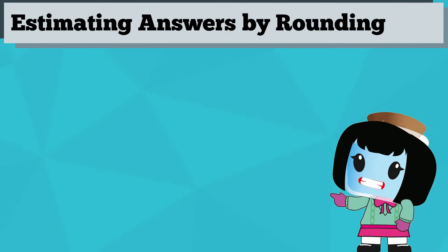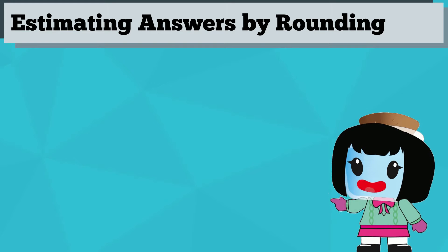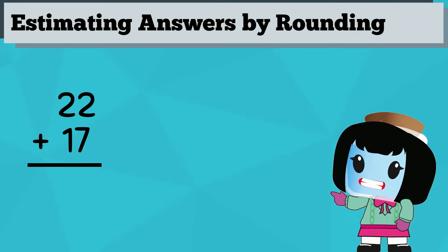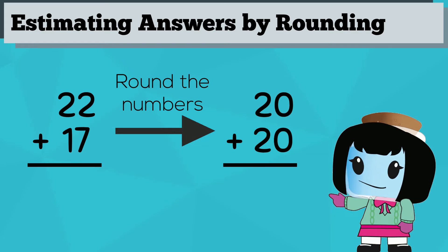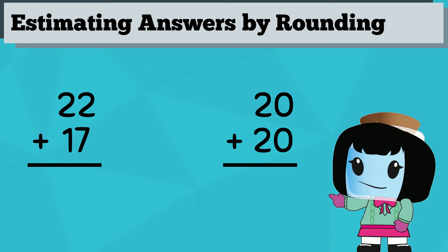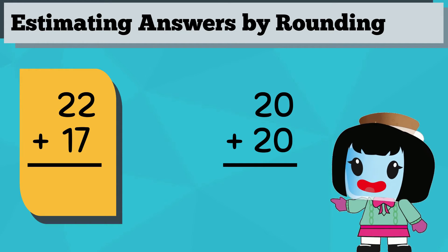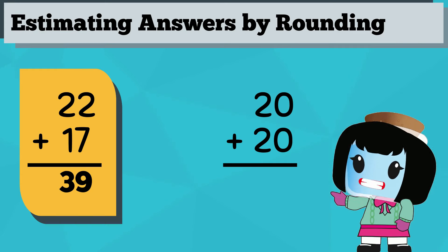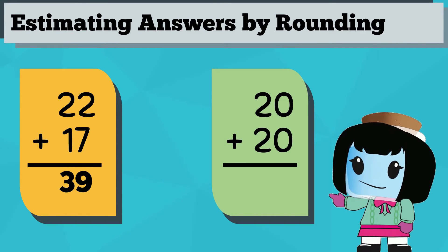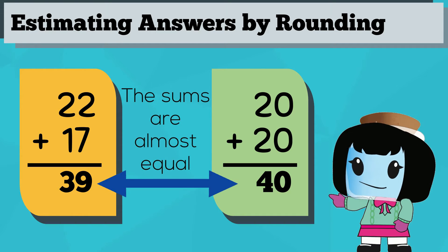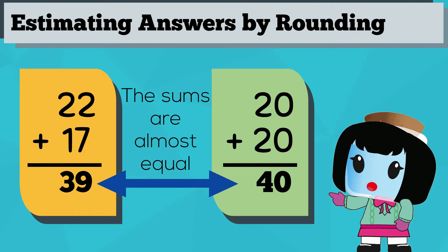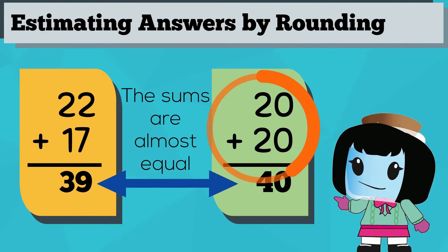Also, rounding numbers helps estimate answers from math equations. Say you want to add 22 plus 17 — you can round it and make it 20 plus 20 instead. Let's compare them: 22 plus 17 equals 39, and 20 plus 20 equals 40. They're almost equal, and adding 20 plus 20 is easier.